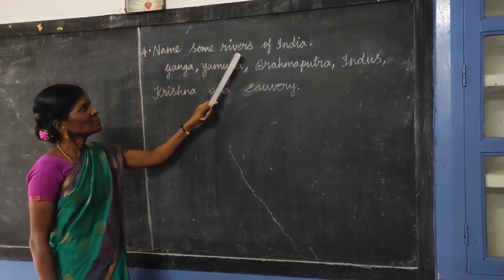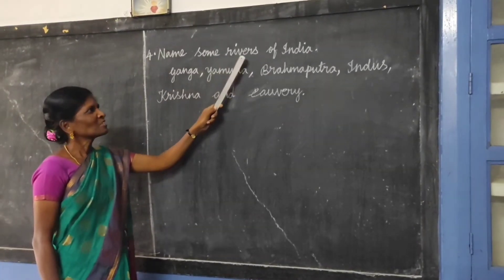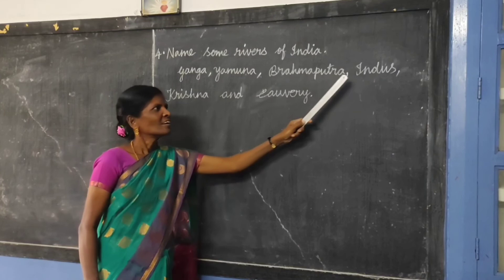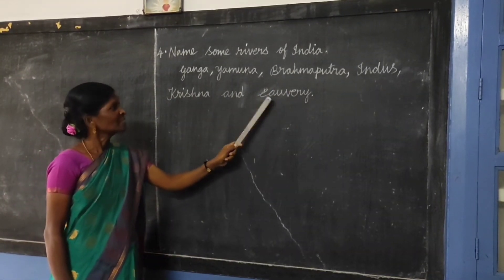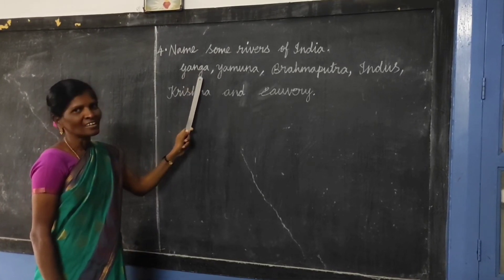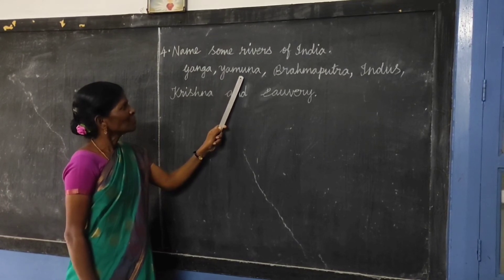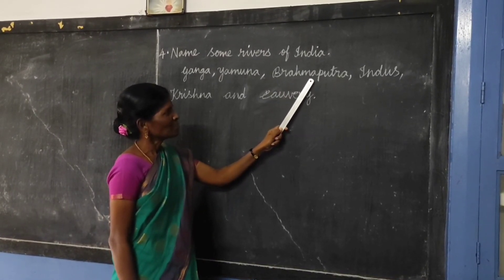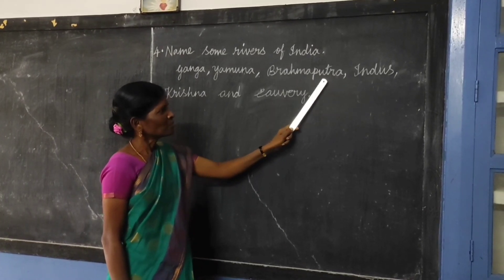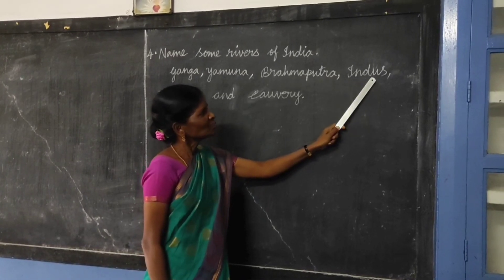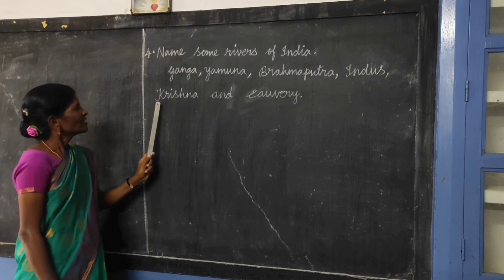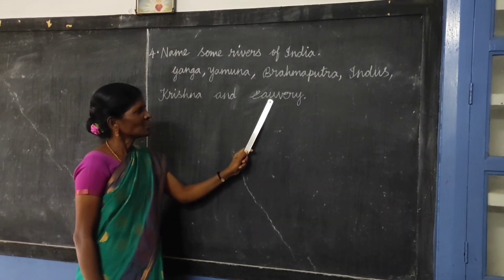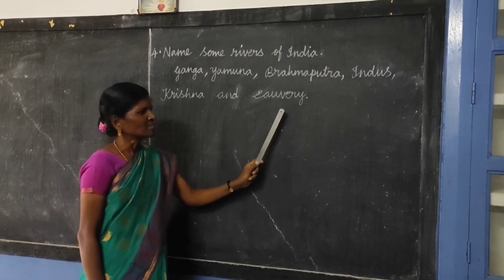Question 4: Name some rivers of India. Answer: Ganga, Yamuna, Brahmaputra, Indus, Krishna, and Kaveri. Thank you children.